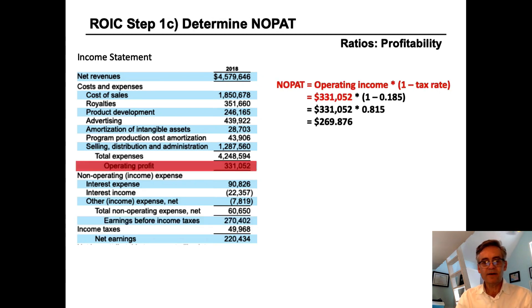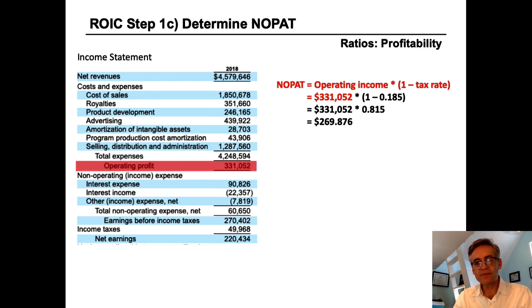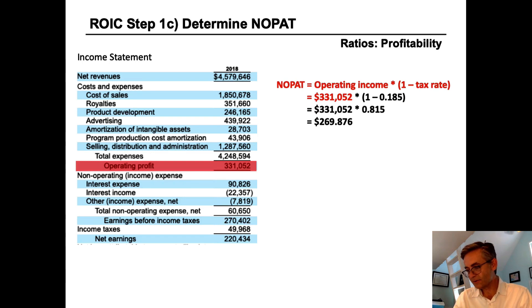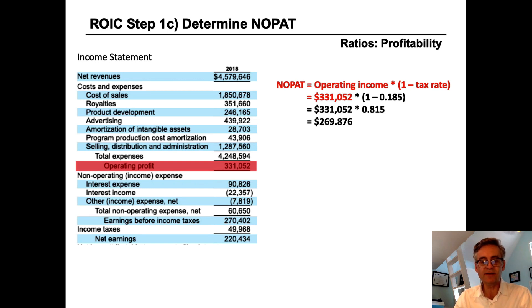The third step is to put these two pieces together to calculate NOPAT. Net operating profit after tax is calculated as operating income multiplied by one minus the tax rate. For Hasbro, operating profit of $331 million times one minus 18.5% yields $269 million. This is what Hasbro would have earned if it had no debt and therefore no interest expense, but still had to pay taxes. This $269 million is NOPAT — the numerator we're looking for.